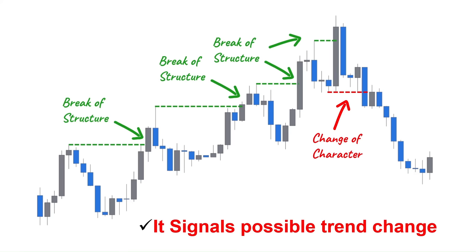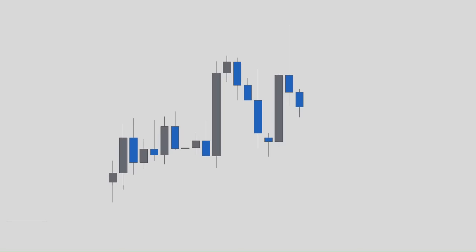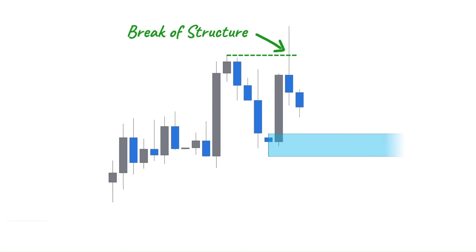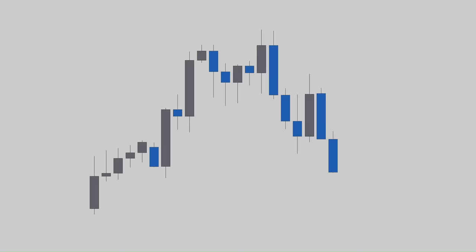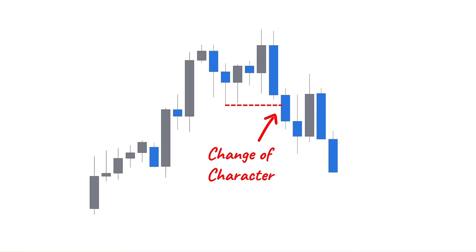Here is a key point. A break of structure is valid even if the market wicks above the higher high, and the demand zone it created makes a valid trading opportunity. But for the change of character, it takes a break and close below the higher low to confirm it. Otherwise, we consider the market still as bullish.